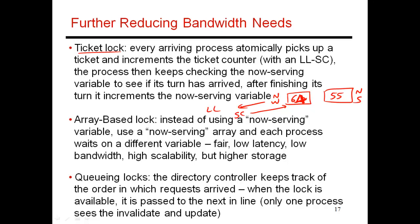After this, I'm going to get into a tight loop which does a load-link, and it is checking to see if the 'now serving' variable equals 63. You're going to keep looping until this 'now serving' variable becomes 63. When a thread finishes and is ready to release the lock, what it does is increment this, making it 56 and then 57, and so on.